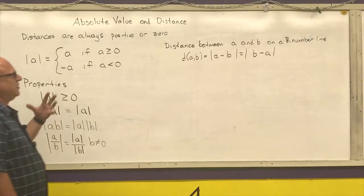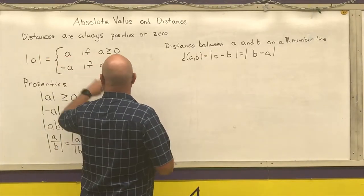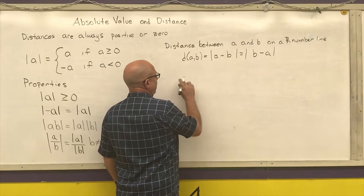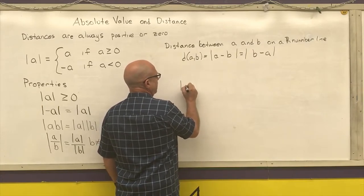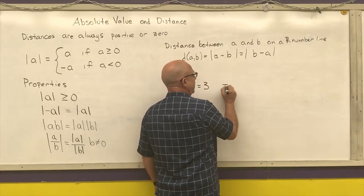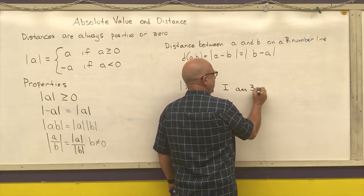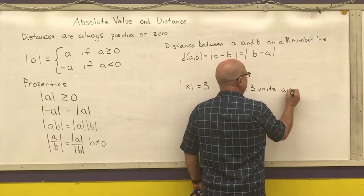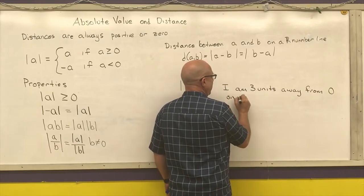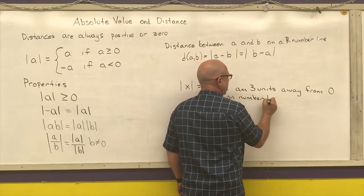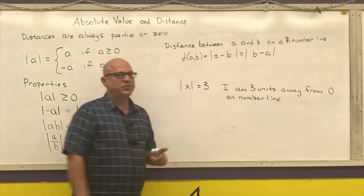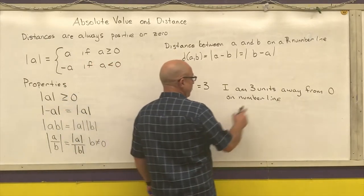Basically what distance is doing is it's telling us how far away something is. Same thing with absolute value. If I know that the absolute value of x is equal to three, that means I am three units away from zero on the number line. A number whose absolute value is three is three units away on a number line from zero.